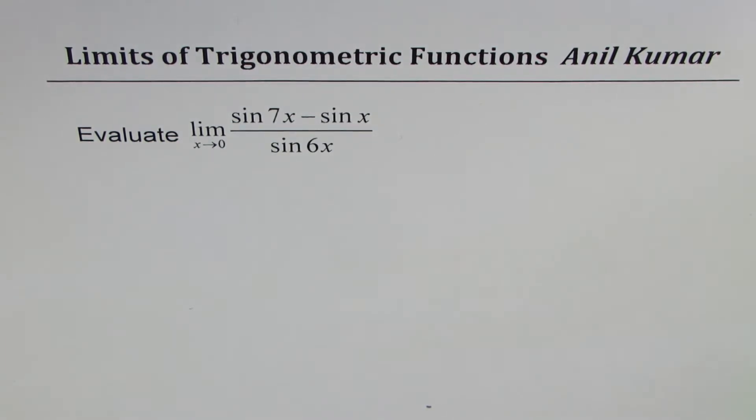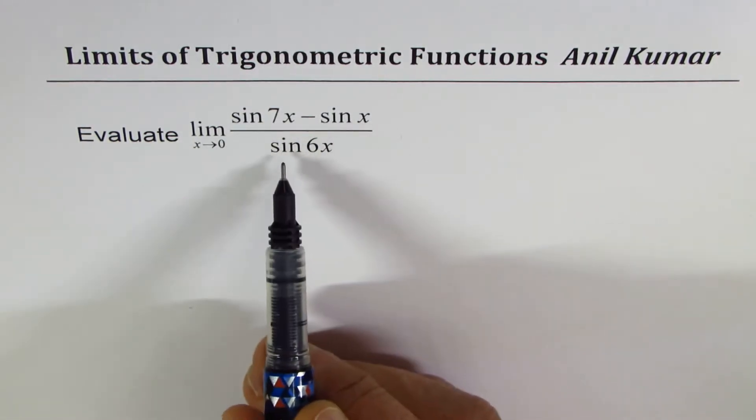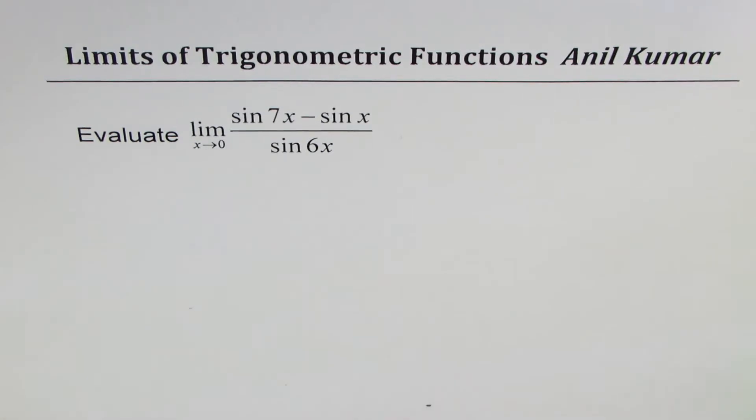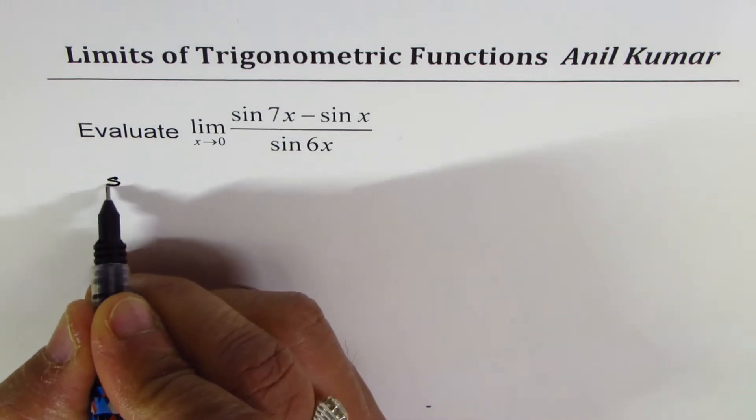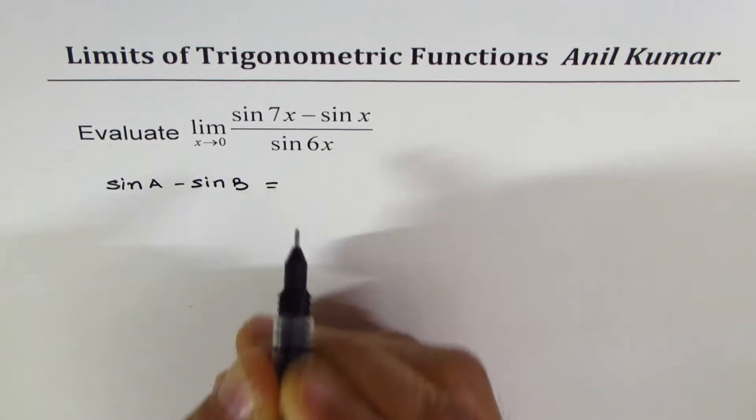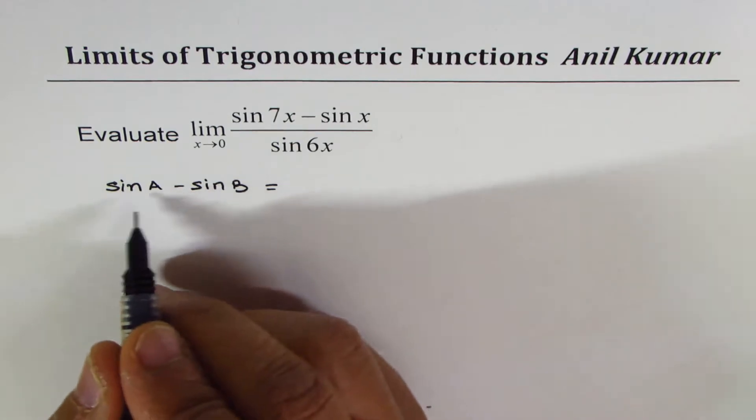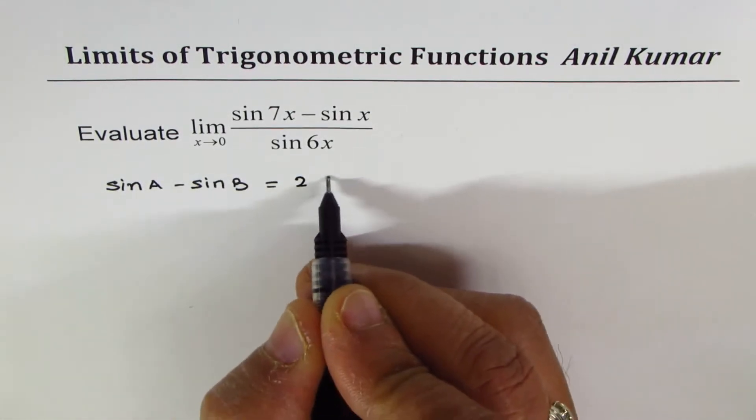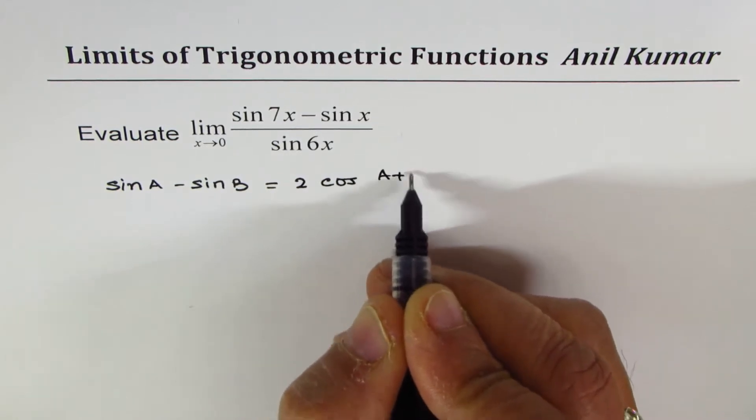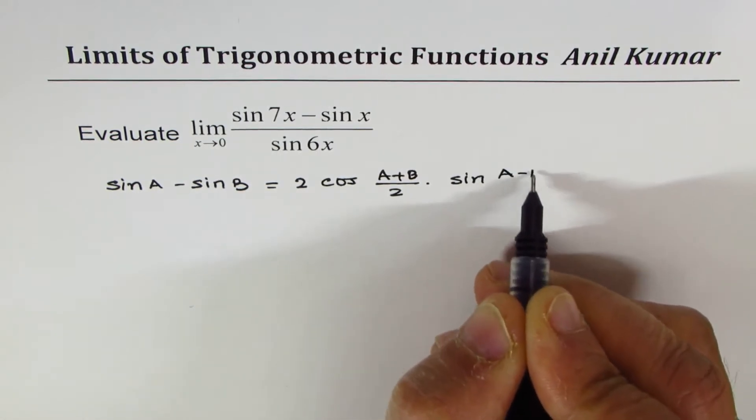We need to find the limit of the function sine 7x minus sine x divided by sine 6x when x approaches 0. The identity I'm going to use is sine a minus sine b equals 2 times cos of a plus b over 2 times sine of a minus b over 2.